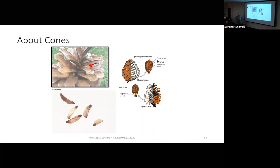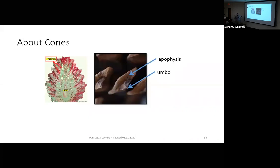Pine seeds have a wing on them for wind dispersal. Looking at a cross-section of a pine cone, you have the axis, the seeds in the middle — ripened ovules but no ripened ovary — and the outside of the cone. On a closed cone, the end of each scale looks like a little diamond; that exposed diamond-shaped part is the apophysis. The prickly thing that may draw blood on some cones is called the umbo. Some pine cones are armed with a prickly umbo, like all our southern pines; some are unarmed, like eastern and western white pine.